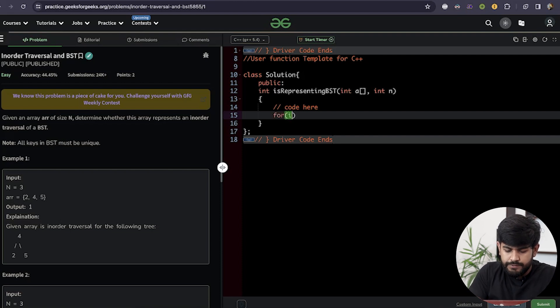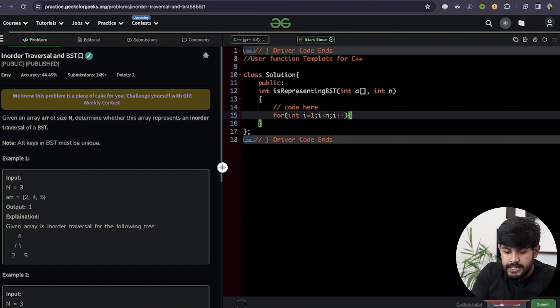We'll iterate: for int i equals 1. Why from the second element? Because we need to check the previous element. Previous element would be present from the second element, not the first. We would get index out of bound if we start from the first element.